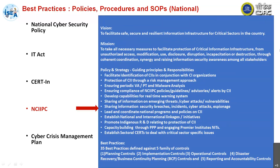There are 35 best practices defined against five families of controls: planning control, implementation control, operational control, disaster recovery or business continuity plan — BCP control, and reporting and accountability control.